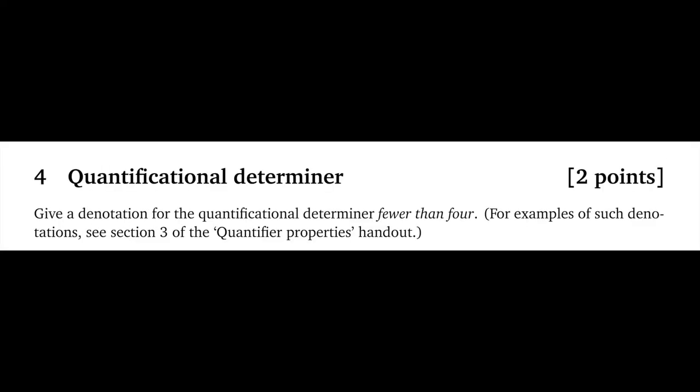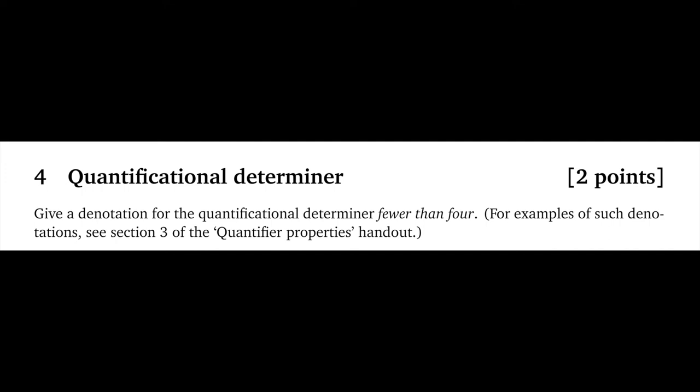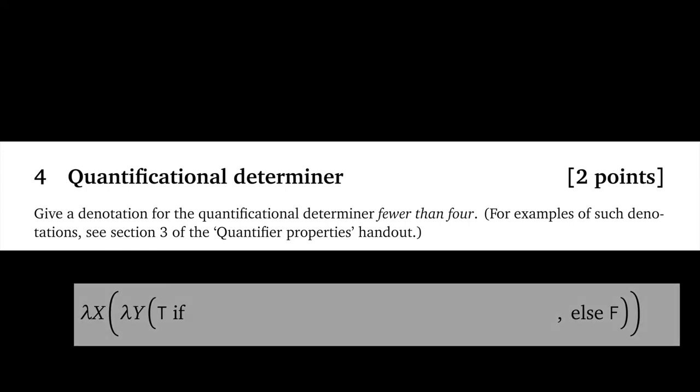Question four, quantificational determiner, worth two points. I'm not trying to be tricky here — I expect this to be easy. The answer looks a lot like a number of semantically similar cases from section three of the quantifier properties handout. Look those up. Just remember your cardinality brackets and make sure you're making use of the framework we offered there.